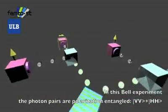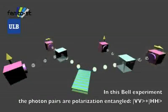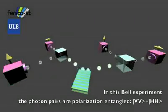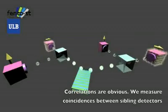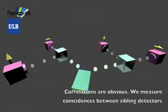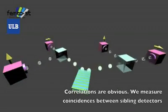In a Bell experiment, the photon pairs are polarization entangled. They are the superposition of vertical-vertical and horizontal-horizontal states. Correlations are obvious. We measure coincidences between sibling detectors.